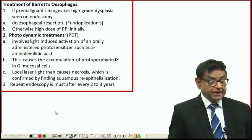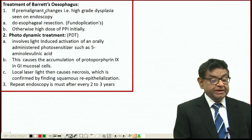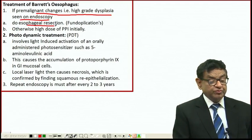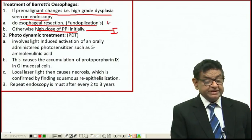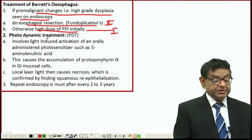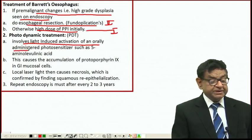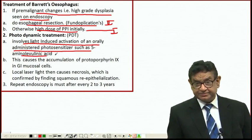Treatment of Barrett's esophagus: if we find premalignant changes with high-grade dysplasia on endoscopy, we can do esophageal resection or fundoplication, or initially try high doses of PPI. If PPI doesn't work, then fundoplication is the first thing. If not in control, the second step is photodynamic treatment.